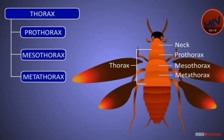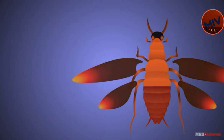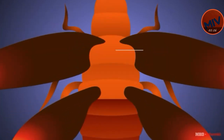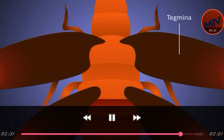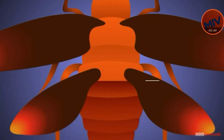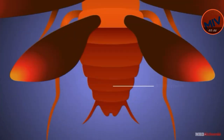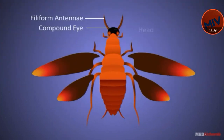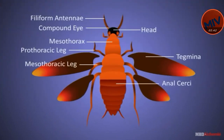Cockroach has two pairs of wings. Abdomen: The posterior part of the body is called abdomen. In a male cockroach, the abdomen is long and narrow, but it is short and broad in females. The abdomen is formed of ten segments. Anal cerci and anus are found in the abdominal segment.